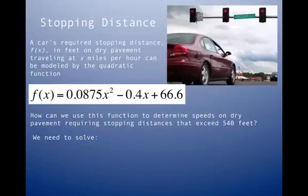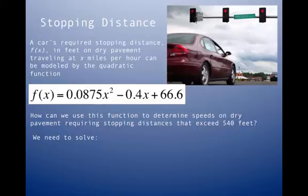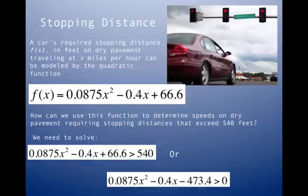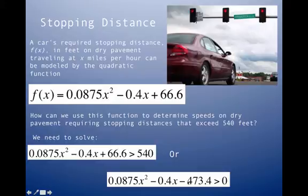Now let's go through a word problem. A car's required stopping distance f(x), in feet on dry pavement traveling at x miles per hour, is modeled by a quadratic function. We want to determine at what speeds stopping distances exceed 540 feet. We solve f(x) > 540, which means we subtract 540 from both sides and solve the quadratic inequality with the new function greater than zero.